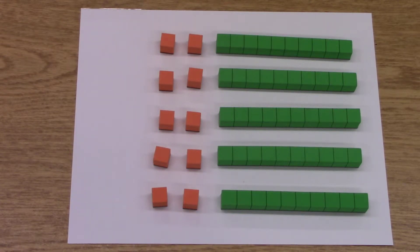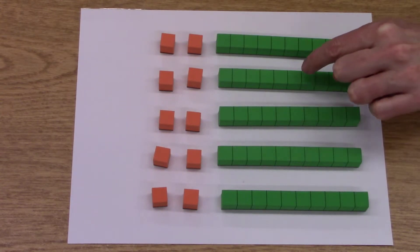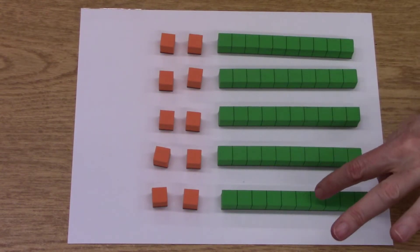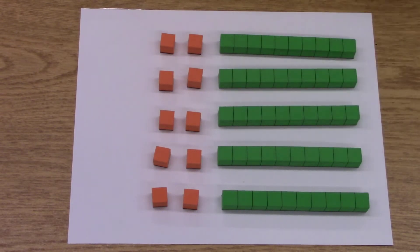Count the 10 rods. There are 1, 2, 3, 4, 5... that's 10, 20, 30, 40, 50.